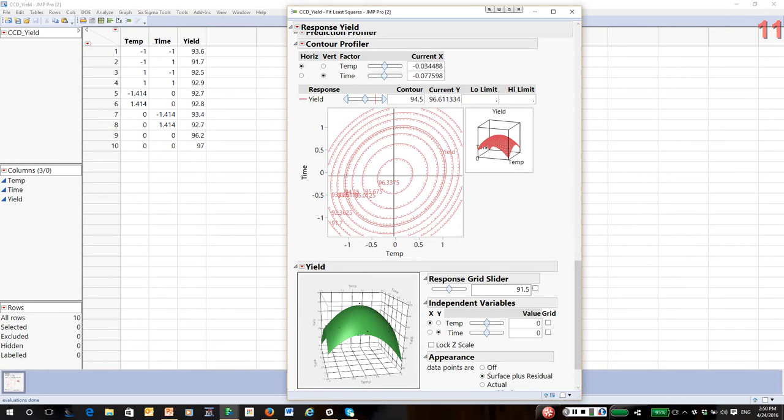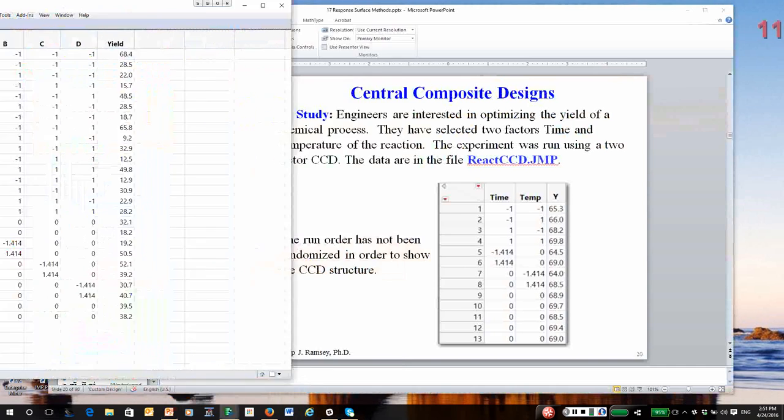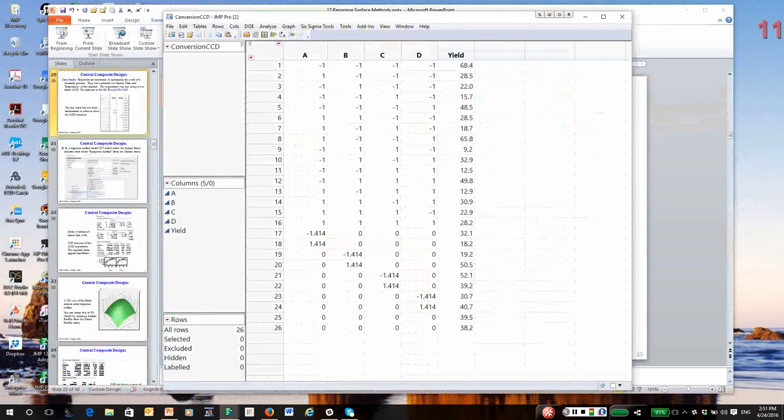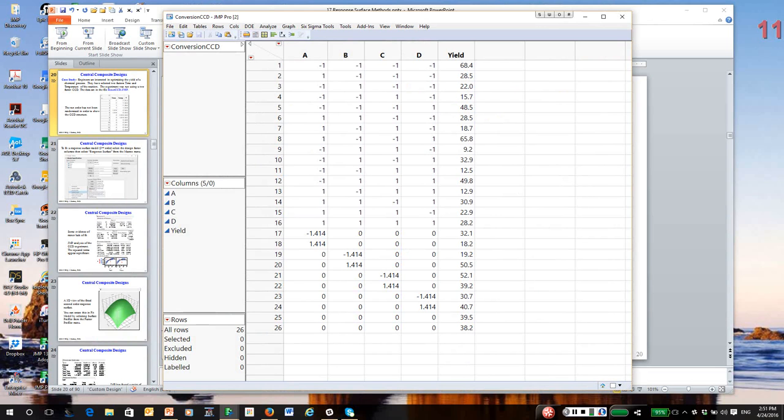We'll do some further analysis of some other types of response surface designs. I'm going to show one other example, and this one doesn't actually have a true maximum. This is another central composite in four factors. This one is a process that converts a monomer to a polymer, and the response once again is yield. Notice the size of the design—this is 26 runs. It's a fairly large design, and probably I would even add more center points to it.